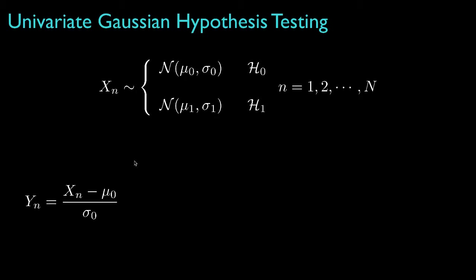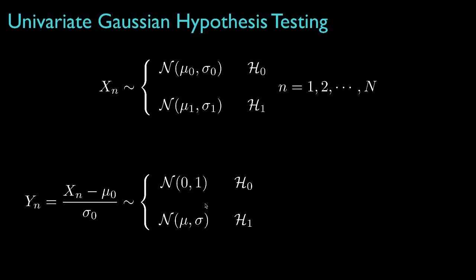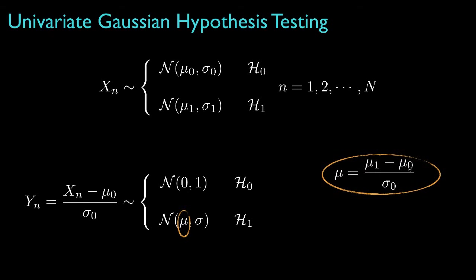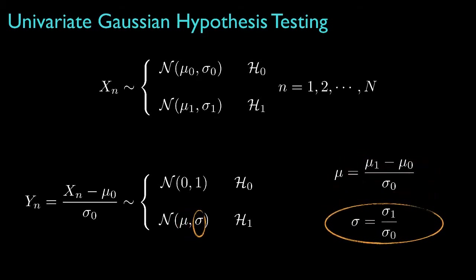It's convenient to begin with a simple preprocessing of the data where we subtract the mean for hypothesis 0 and then divide by the standard deviation for hypothesis 0. This gives us a situation where hypothesis 0 corresponds to a standard normal random variable, and hypothesis 1 is a Gaussian random variable with mean equal to (mu_1 minus mu_0) divided by sigma_0, and standard deviation equal to sigma_1 divided by sigma_0.